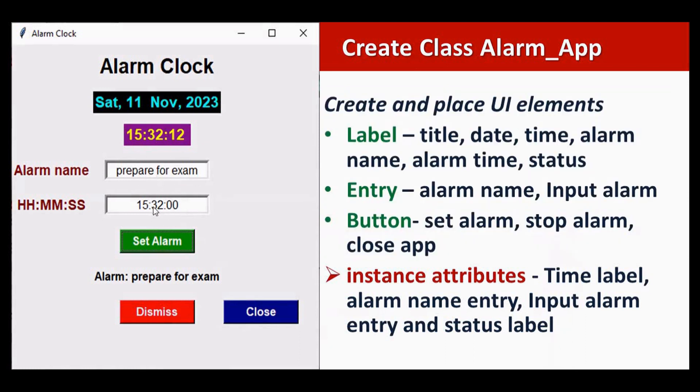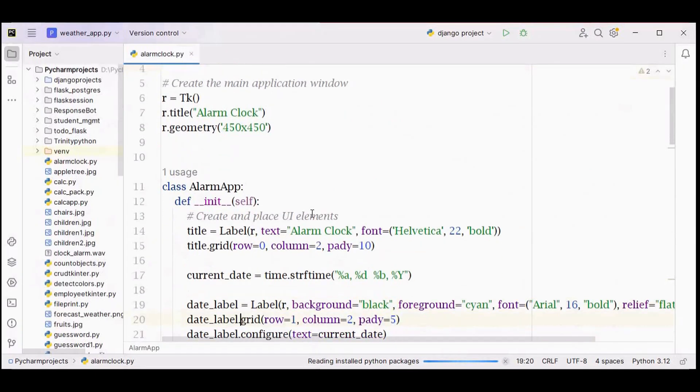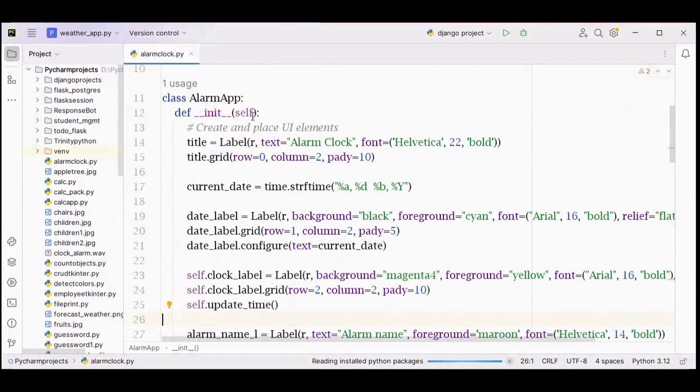In this case, time label, these entry widgets - alarm name entry, input alarm entry - and also the status label, these are all declared as instance attributes. In order to declare something as instance attribute we have to give self dot the attribute name. All these things are placed in the init method. Init method will be called automatically whenever an instance is created.